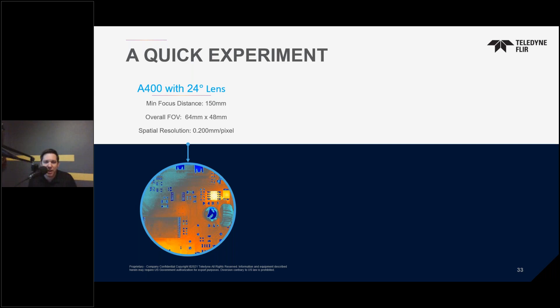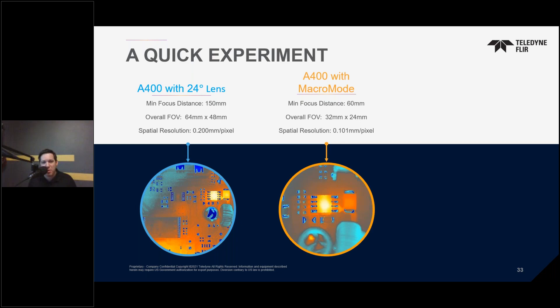Now let's use the macro mode. Macro mode is a firmware option that physically moves the detector within the camera body to adjust the optical path slightly and improve magnification — similar to holding two magnifying glasses at different distances to play around with the optics. With macro mode enabled, the working distance drops to 60 millimeters and the overall field of view shrinks to a 32 by 24 millimeter box. We achieve a spatial resolution of 101 micron per pixel, meaning roughly 50 pixels fit on the 0402 component — five times more than with the standard lens — a huge improvement likely yielding pretty good temperature data.